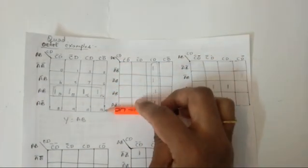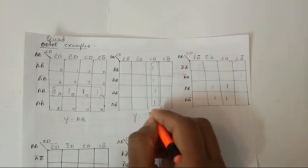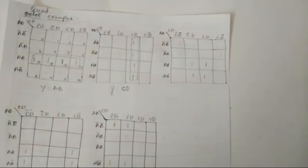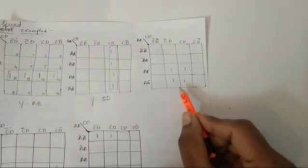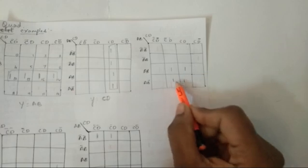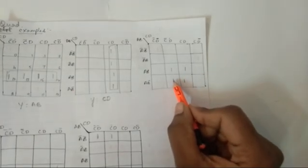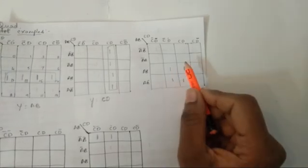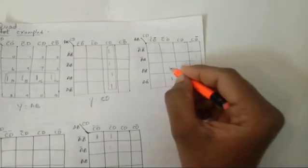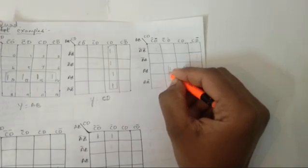If I have a case like this, these four terms cancel each other and the remaining one is CD, so y = CD is my answer. Similarly, I can get a possibility of ones like this, and here also I can group the ones. The maximum grouping for this is four, so it is a quad.